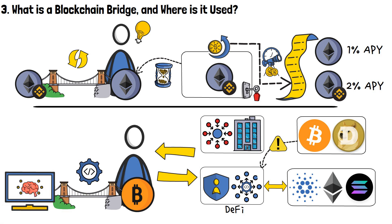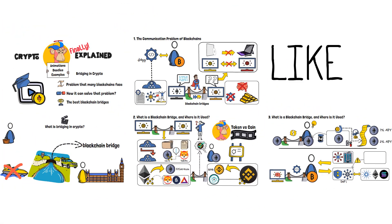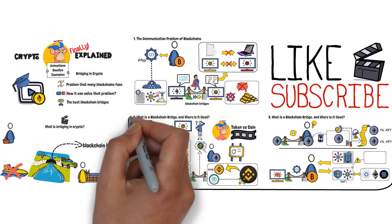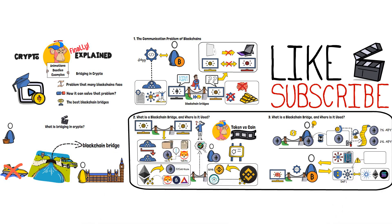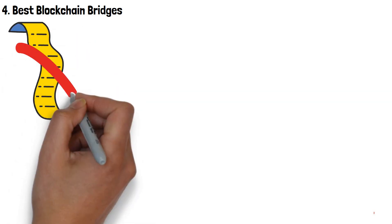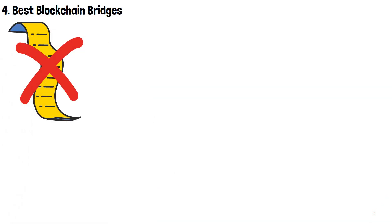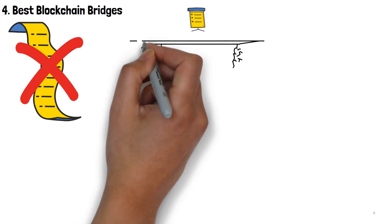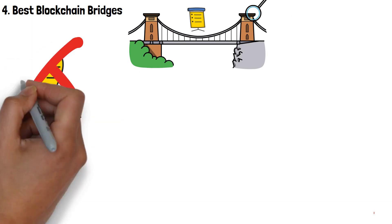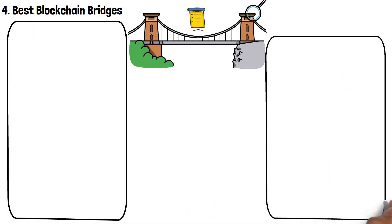If you're enjoying my explanations thus far, make sure to give this video a like and subscribe to the channel. Now that you know what is bridging in crypto and where these bridges are used, there's one more thing I'd like to discuss: the best blockchain bridges and how to find them. This won't be a list of specific bridges to check out. Instead, I'd like to tell you about the types of bridges you might come across and what to look for with each type. You should note that there are two major types of blockchain bridges: centralized and decentralized ones.